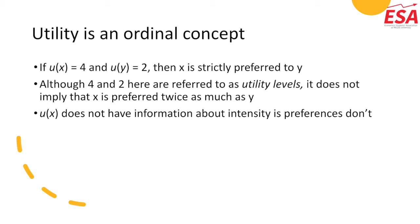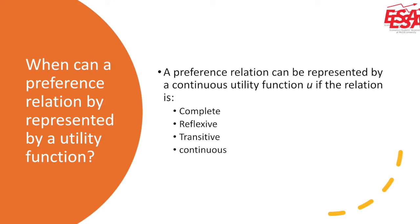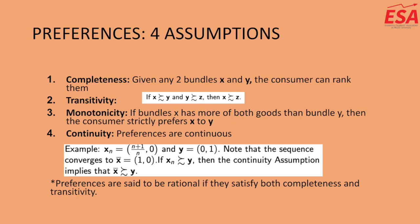Utility functions do not have information about intensity. That being said, you can always generate an indifference curve if you have enough information about the consumer and a description of their preferences. This is accomplished by working primarily with indifference curves — simply set the utility function, either derived from a word problem or given by your professor, equal to a certain utility level. A preference relation can be represented as a continuous utility function if the relation is complete, reflexive, transitive, and continuous.